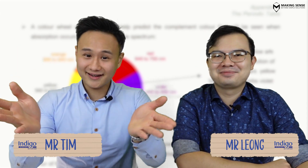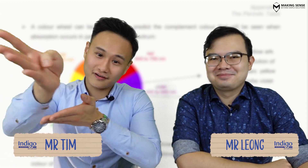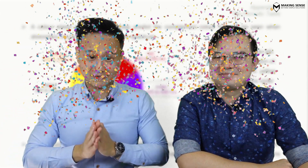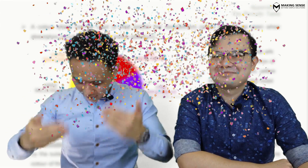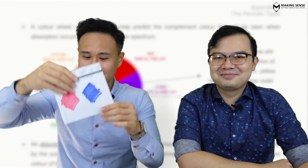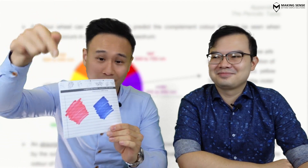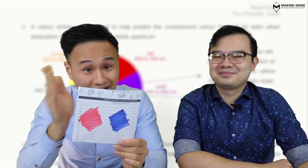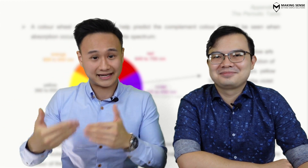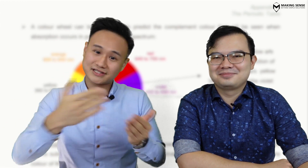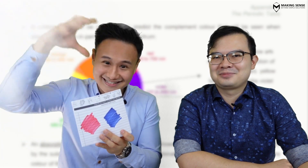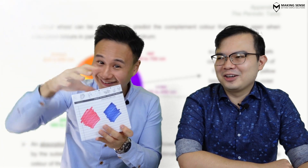Hi guys! Welcome back. This is video 4 of Transition Metals — finally, the last lesson. We're going to recap: what actually is color? Why is this red and why is this blue? I have never understood this, but I hope after our lessons together we can now finally understand. Mr. Leong, can you help me shed some light — get it? Shed some color on this?